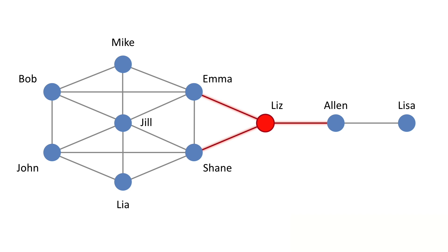Why is that? Liz is bridging between our two peripheral individuals, Alan and Lisa, who are out at the exterior of the network, from the core of the network — from Jill and Mike and Leia and all those people. Liz is that bridge. Liz does connect to Emma and Shane, but Liz is the junction point. If you look at the node where most of the shortest paths are going through, they're going through Liz — because Alan and Lisa are out there in the tails.